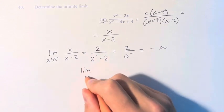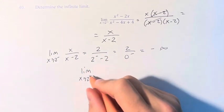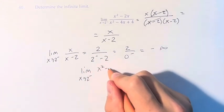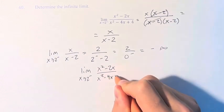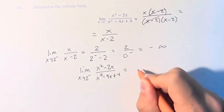Therefore, the limit of this function, as it approaches 2 from the left, where it's x squared minus 2x over x squared minus 4x plus 4, this limit is equal to negative infinity.